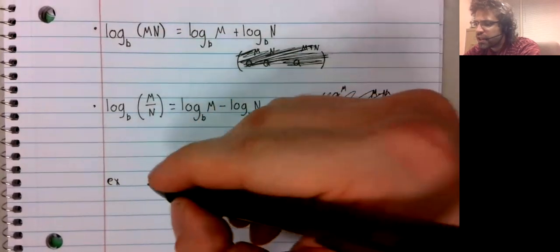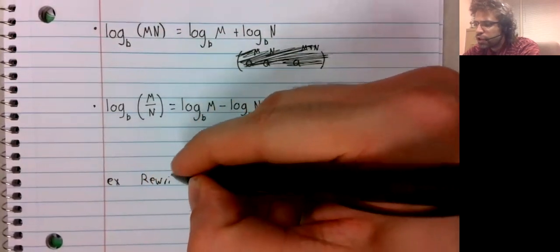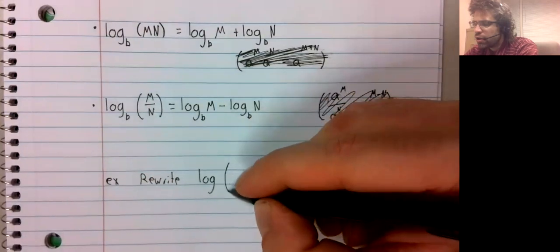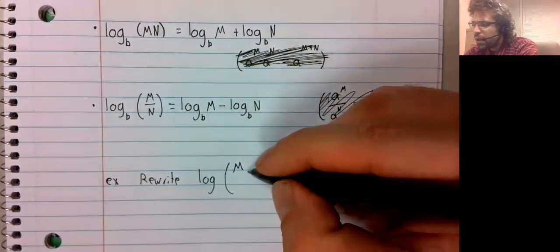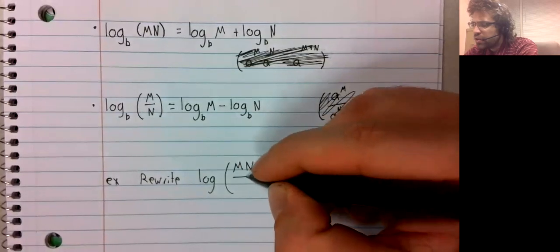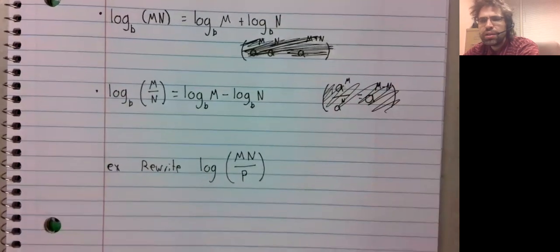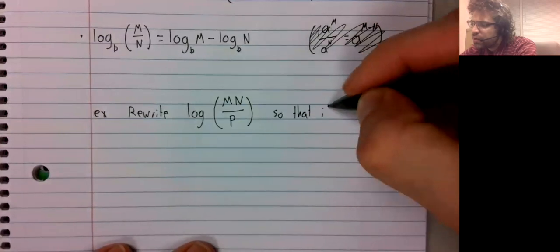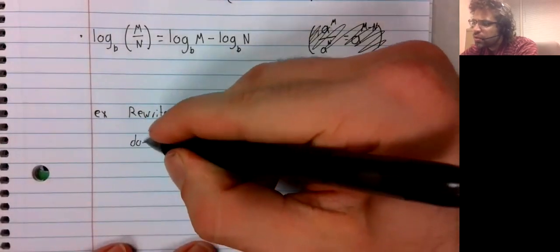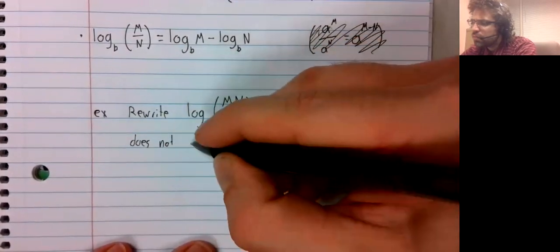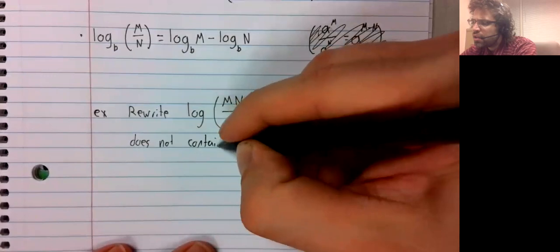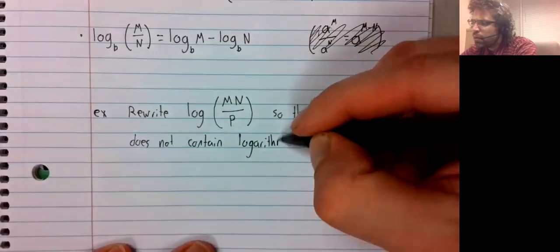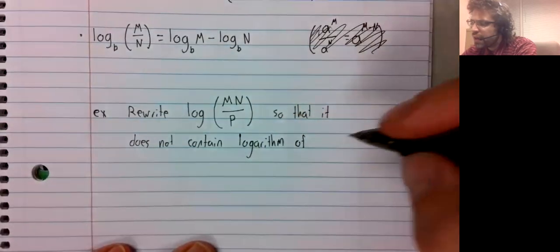So, example. Rewrite the common logarithm of M times N divided by P so that it does not contain a logarithm of a product.